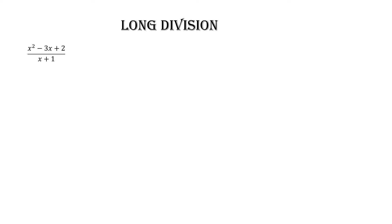Here you have a numerator and the degree of the numerator is bigger than the degree of the denominator, so we try to do the long division method. In the long division, write x²-3x+2 — the numerator — inside the division sign; it becomes the dividend. x+1, the denominator, you write outside the division sign and it becomes your divisor.